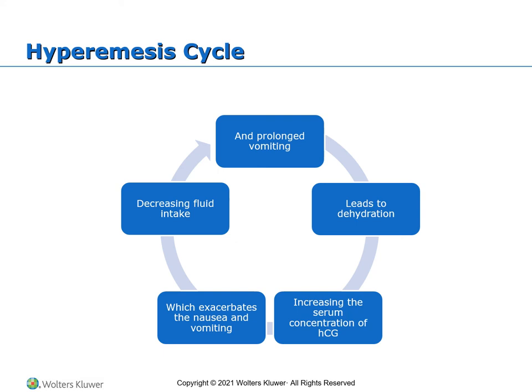Clinical manifestations: dry mucous membranes, poor skin turgor, decreased blood pressure, increased pulse rate, inability to tolerate PO fluids, electrolyte imbalances, possibly alkalosis from loss of hydrochloric acid in the gastric fluids. Immediate assessment includes urine dipstick, liver enzymes, CBC, urine ketones (which are often present), BUN, and urine specific gravity. Make sure she is NPO, give IV fluids, anti-emetics, and electrolyte replacement. Antiemetics: promethazine (Phenergan), prochlorperazine (Compazine), ondansetron (Zofran), vitamin B6 (pyridoxine), metoclopramide (Reglan), and enteral or parenteral nutrition.